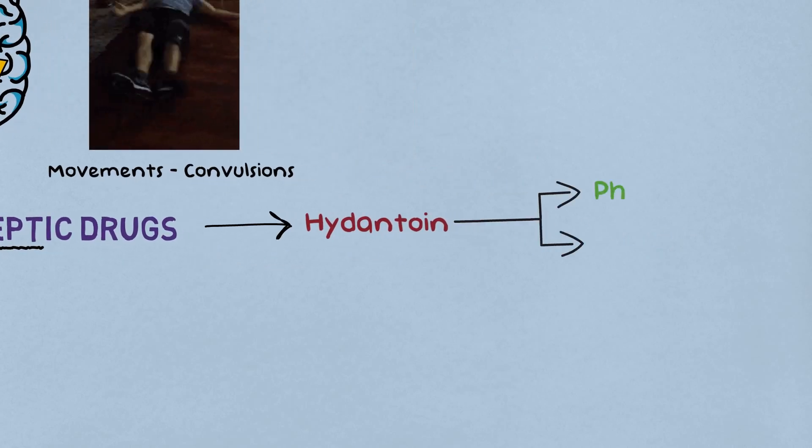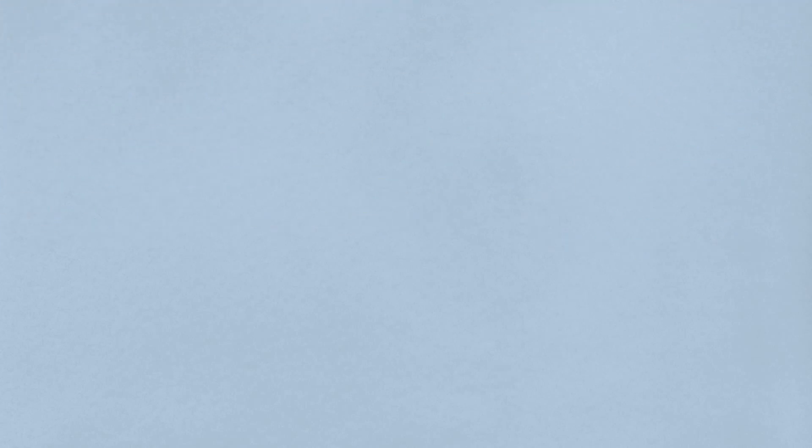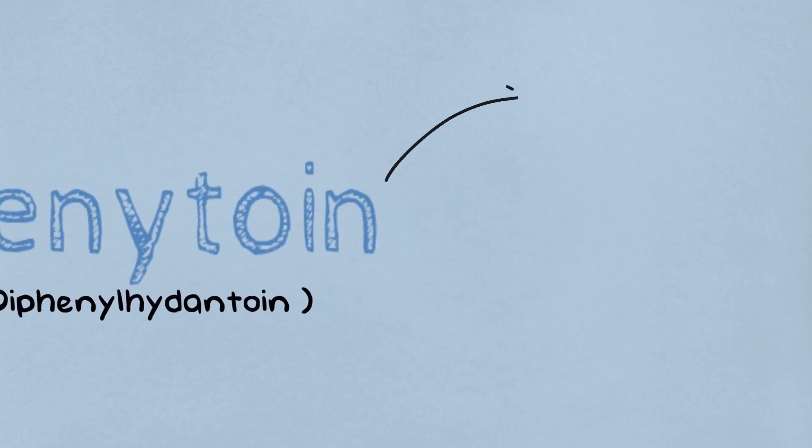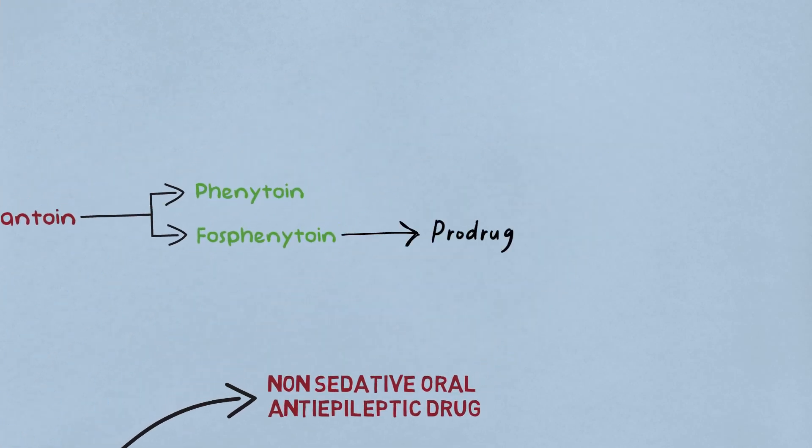We got two drugs under this group. They are phenytoin and fosphenytoin. In today's lecture, we are going to learn in detail about the phenytoin drug. It is also called as diphenylhydantoin. Phenytoin is a non-sedative oral anti-epileptic drug. Whereas fosphenytoin is a prodrug of phenytoin which is given intravenously or intramuscularly.